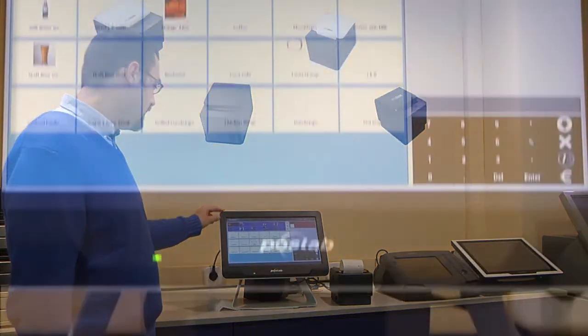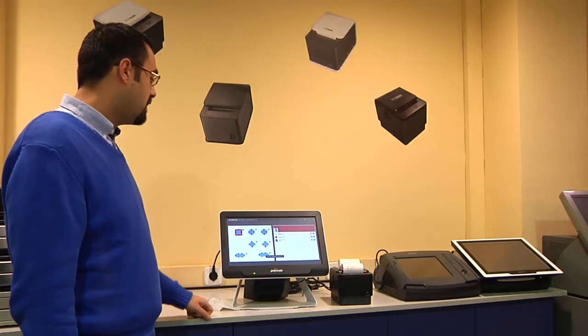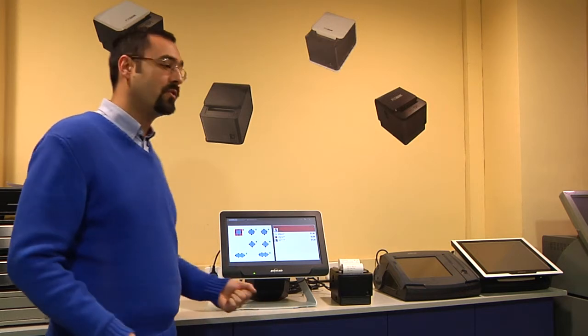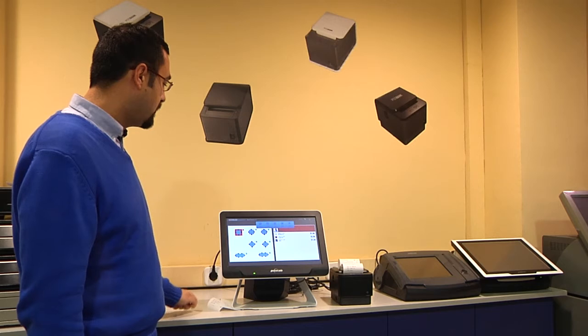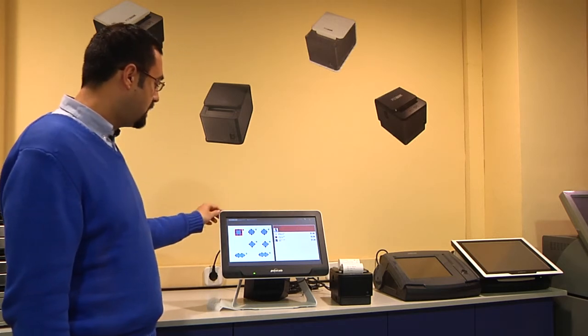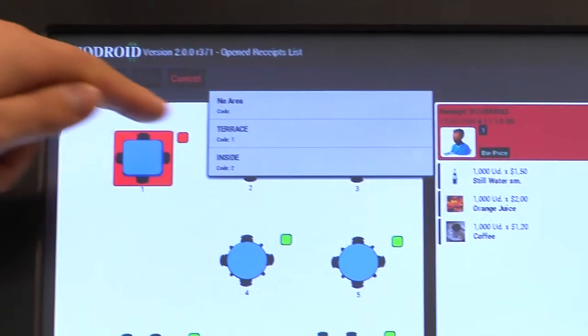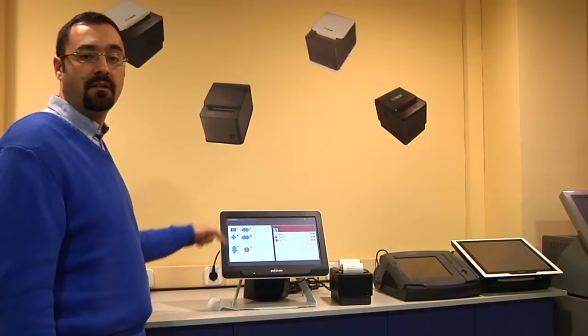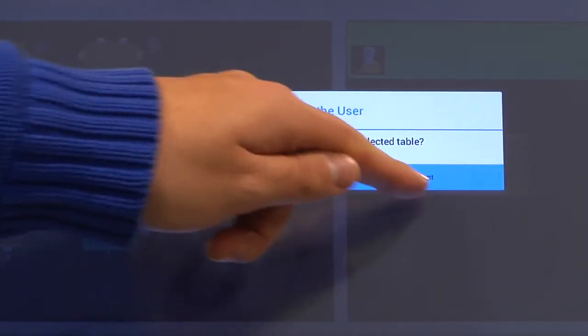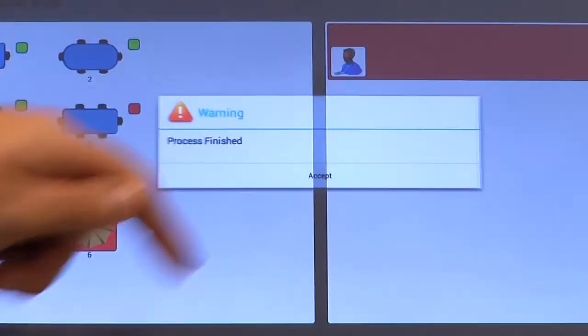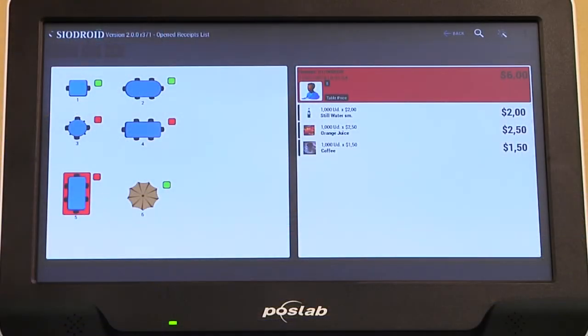Last thing we can do is if we have an open table imagine somebody is in the terrace and it starts raining so what you want to do is to move the contents of that table to another one so we just click on the table, click on the move button and then we can choose one of the tables of this area or even we can change from the area to the inside area or whatever and select a new table to move. Then we move all the contents of the previous table to the new table. So the process is finished and now this table has the previous items of the last table.